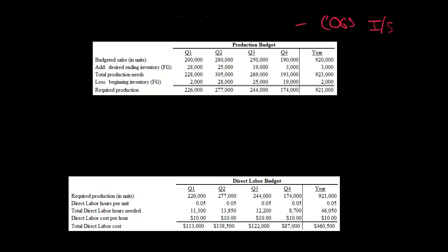We're going to start with how many bottles of orange juice we're going to produce — 226,000. Then we need to say, how many hours of direct labor are we going to use per unit, per bottle of orange juice? How much time do people spend in terms of direct labor hours to manufacture a bottle of orange juice? Let's assume that it's 0.05 hours.